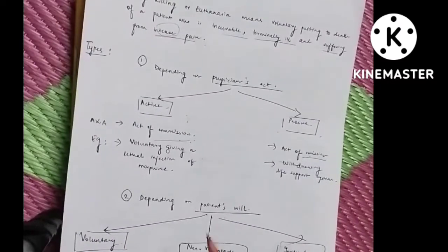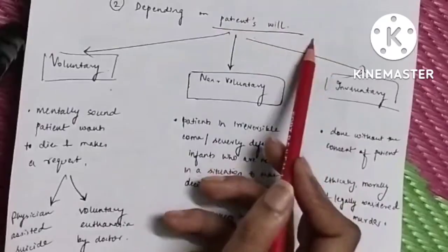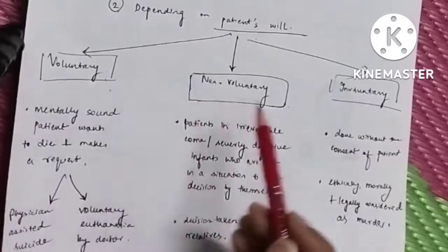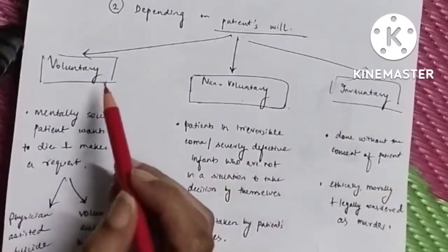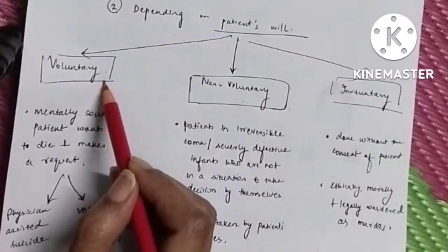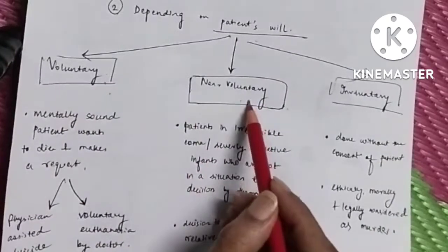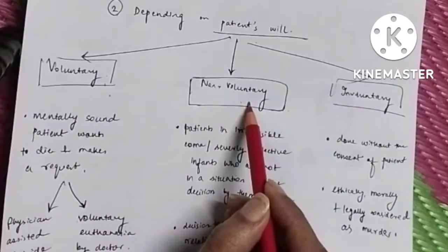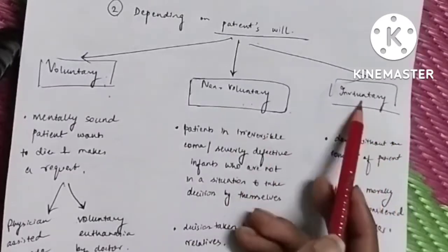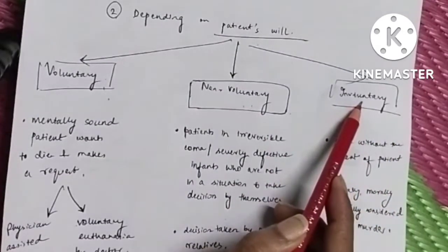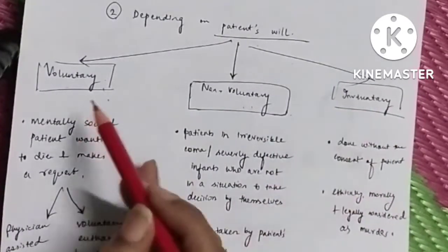Now we have depending on the patient's will, the kind of euthanasia are three types: voluntary, non-voluntary, and involuntary. What is voluntary? It means according to the patient's will. Non-voluntary means the patient is not in a situation to take his or her own will. And involuntary means there is no concept of patient's will in this case.